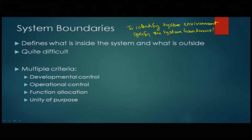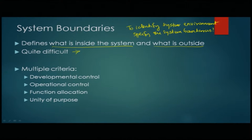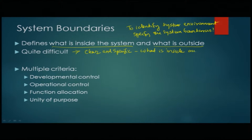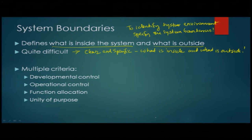It sounds quite simple: it simply says what is inside the system and what is outside. But it is quite difficult. One difficulty is that it needs to be clear and specific what is inside and what is outside. System boundaries, even though they sound very simple, are quite difficult to clearly and specifically define.